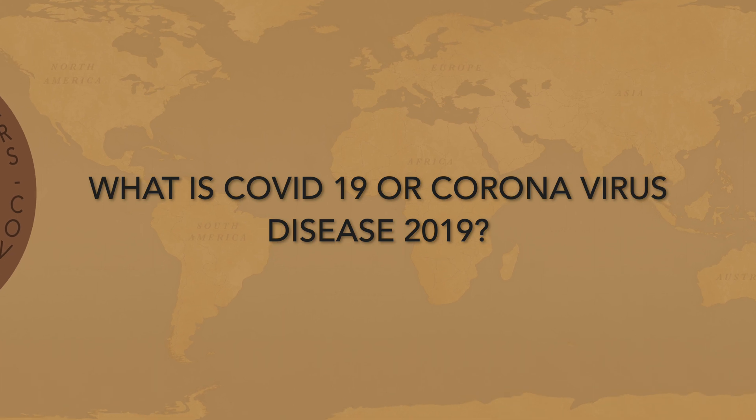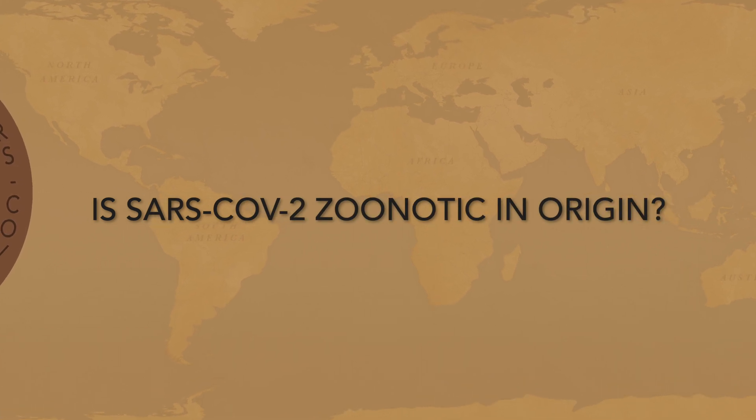Coronavirus is a family of different strains of viruses causing various illnesses ranging from the common cold to severe lung infections like pneumonia. COVID-19 is the disease caused by a new strain called SARS-CoV-2, which stands for severe acute respiratory syndrome coronavirus 2, discovered in 2019 in Wuhan, China, and responsible for the 2019-20 pandemic. The virus is thought to be zoonotic in origin, closely related to viruses found in bats and pangolins, with a non-seafood wholesale market as a possible point of origin.